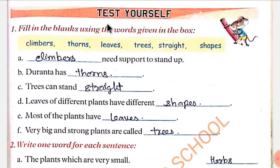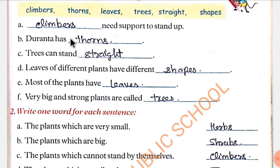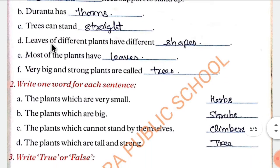Test yourself — how much knowledge do you have? Fill in the blanks using the words given in the box: climbers, thorns, trees, straight, shapes. Climbers need support to stand up. Doranta has thorns. Trees can stand up straight. Leaves of different plants have different shapes. Very big and strong plants are trees.